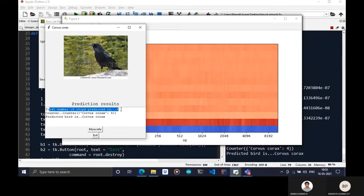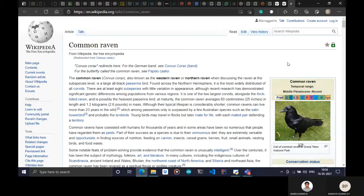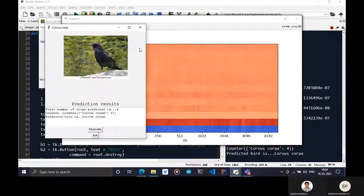As you can see, total number of clips predicted is four, and all four are predicted as Corvus corax. These are the MFCCs that are used. Now the Wikipedia page of the bird Corvus corax will be shown. As you can see, common raven is Corvus corax, which is shown. Now we'll try with the upload option.